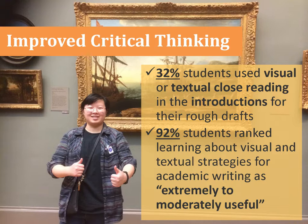These are some results. It certainly did improve visual thinking to bridge visual and textual literacy for these students. 32% used visual or textual close reading in their introductions for the rough drafts. It may not seem like a huge statistic, but in fact it was quite a bold move — because to do a close reading of visual representation was something they had never done in their five-paragraph model essay from high school. This was really an opportunity for that daring third to be more creative and be rewarded for it. Then 92% of students ranked learning about visual and textual strategies for academic reading as extremely to moderately useful.